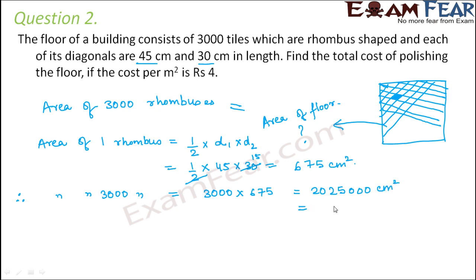So we can convert it into meter square. So we know that 1 meter is equal to 100 centimeter. Therefore, 1 meter square will be equal to 10,000 centimeter square. Therefore, 1 centimeter square would be equal to 1 divided by 10,000 meter square. So therefore, this much centimeter square would be equal to 2025000 divided by 10,000 meter square. So this here, 000 will cancel out. So it is 202.5 meter square. So this is the total area of the floor.